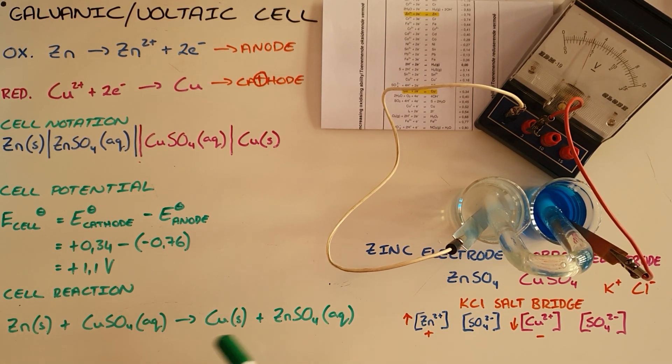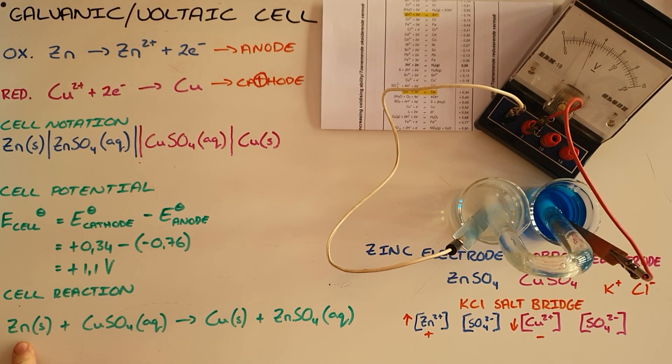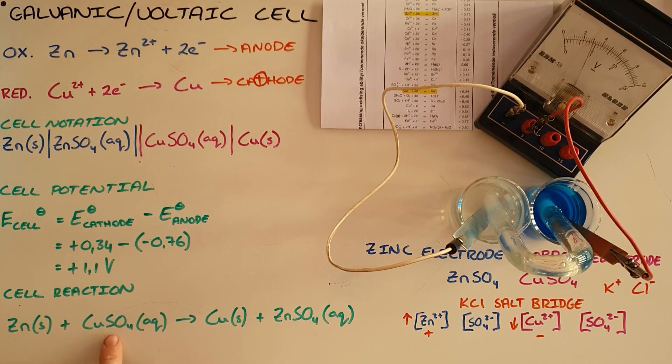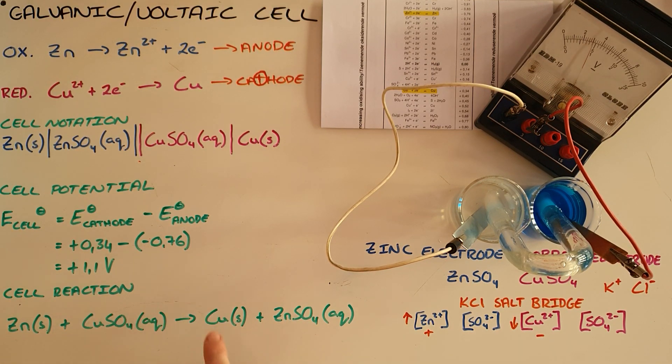We can also write this as a cell reaction that says that we start with solid zinc and aqueous copper sulfate, which is then converted into solid copper and zinc sulfate aqueous.